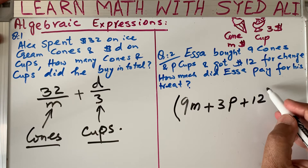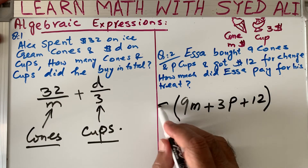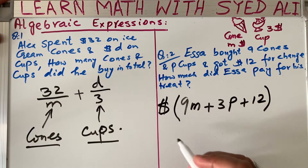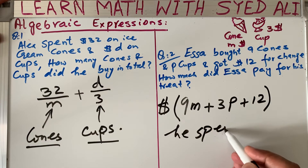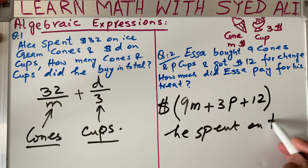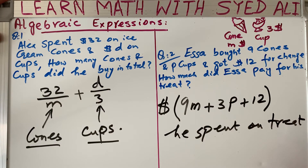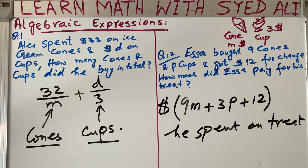The total amount Isa paid for the treat is 9m plus 3p. That is the whole amount he spent. You have to read the question carefully so that it makes sense — sometimes you divide and sometimes you multiply, depending on what the question asks.